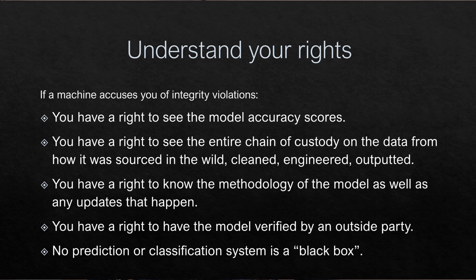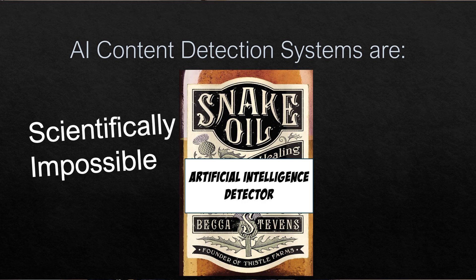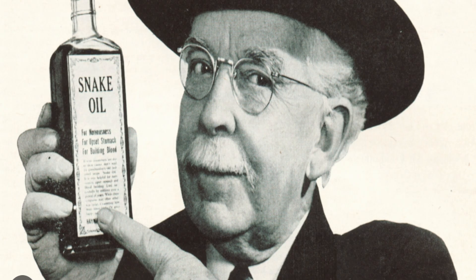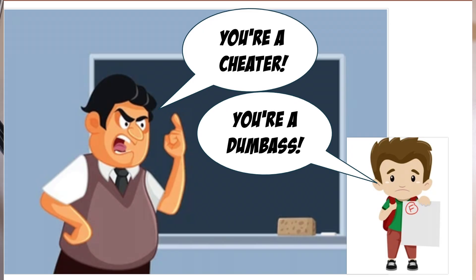Both AI detection generators and plagiarism checkers are scientifically impossible and no better than a coin flip. The reality is there are a lot of charlatans in this industry selling snake oil to school districts. This is a vain attempt to control fear, which leads to distrust in the classroom and inefficiencies in the education system.